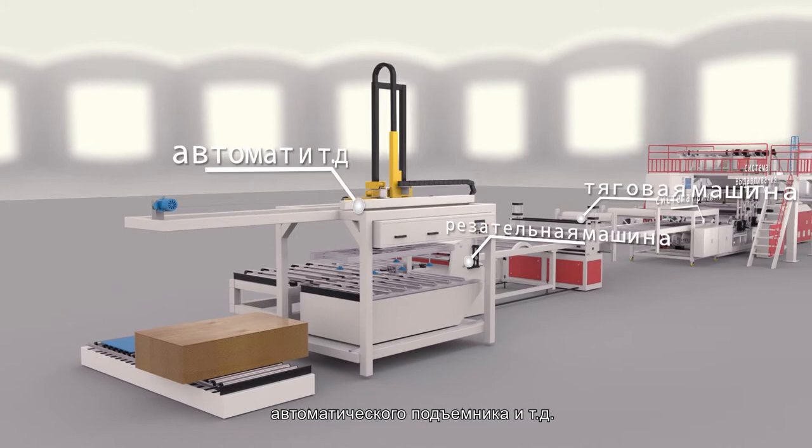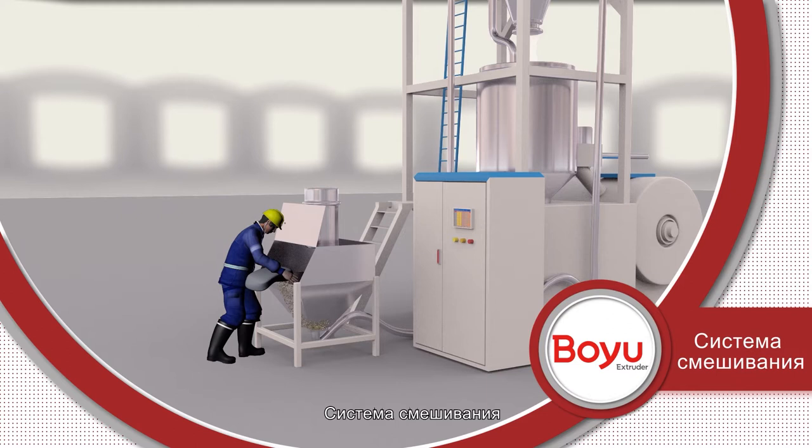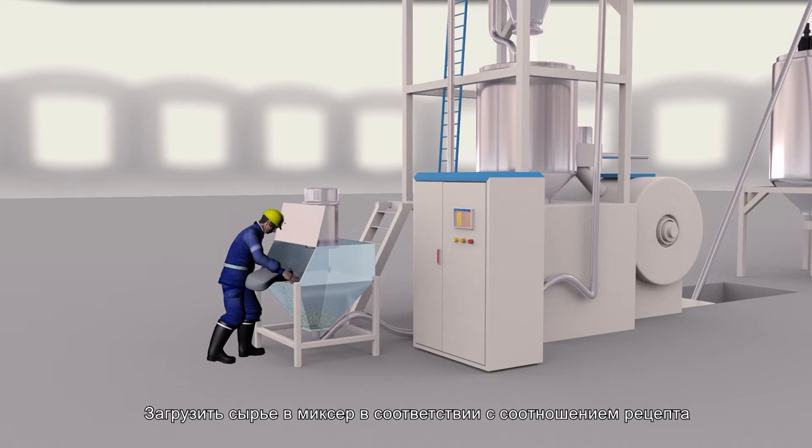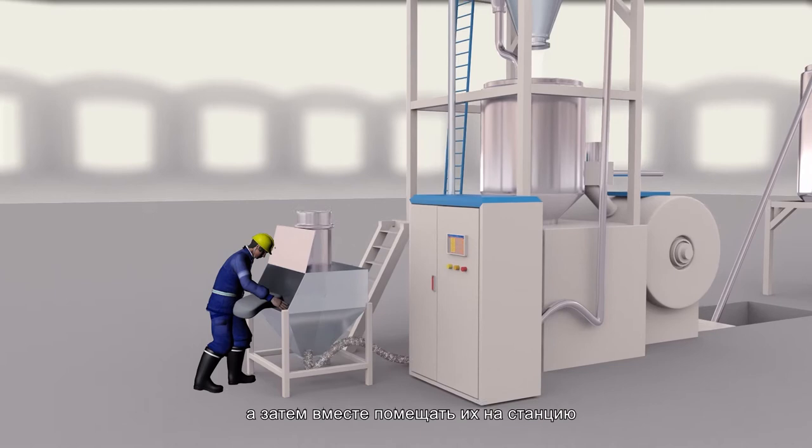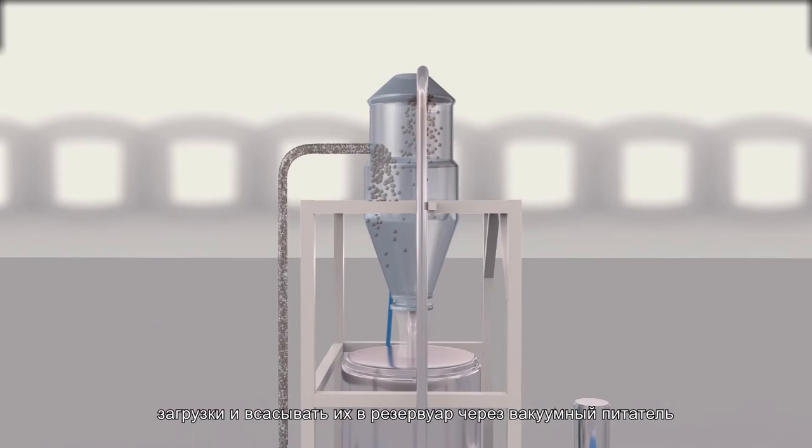Mixing System. The first step is feeding. Materials are put into the mixer in proportion to the formula. Other processing aids need to be measured separately and mixed together, then put into the feeding station and sucked into a feeding tank by vacuum feeder.